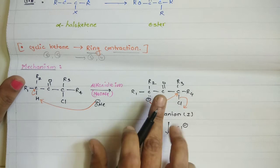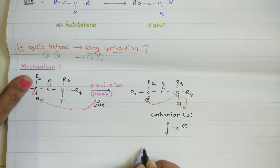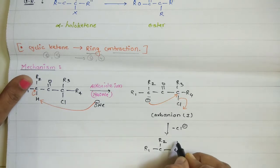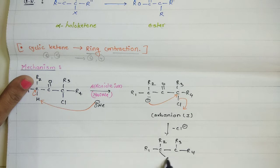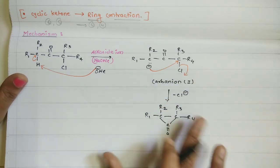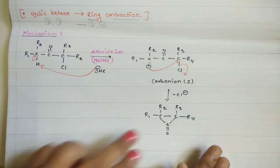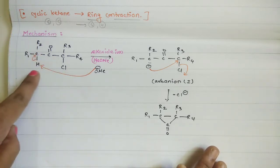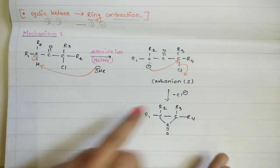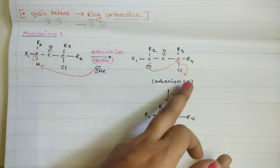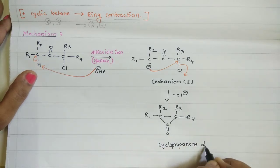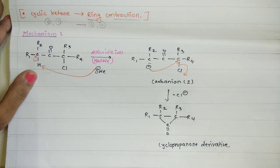After removing the chloride ion, a cyclopropanone derivative is formed. So in Step 1 of the Favorskii rearrangement: first, proton abstraction by the base gives carbanion 1; then the carbanion attacks the halide-bearing carbon; the halide leaves; and a reactive cyclopropanone derivative intermediate is obtained. This cyclopropanone intermediate is the key step.